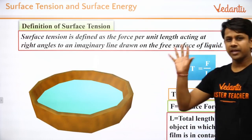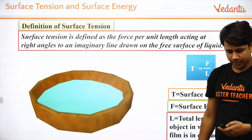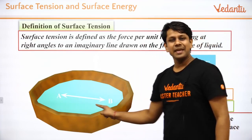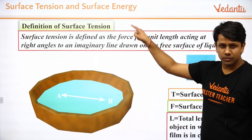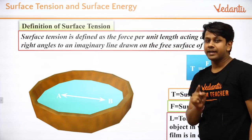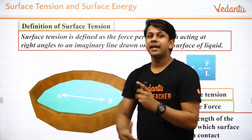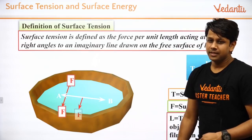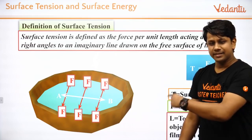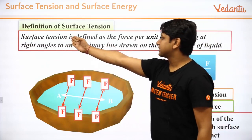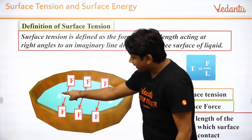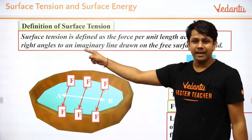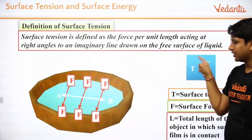Take a liquid and draw an imaginary line in it — here the white line from A to B. The surface tension force acts at right angles to any such imaginary line drawn at the surface. All the forces you see forming perpendicular to the line are the surface tension forces. Surface tension = force divided by length.